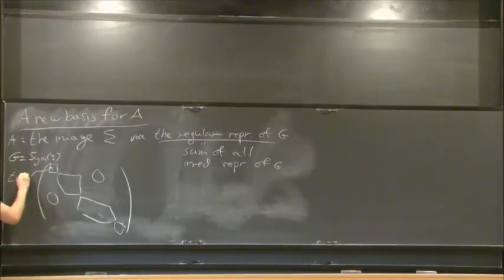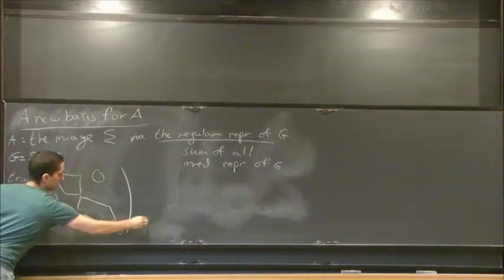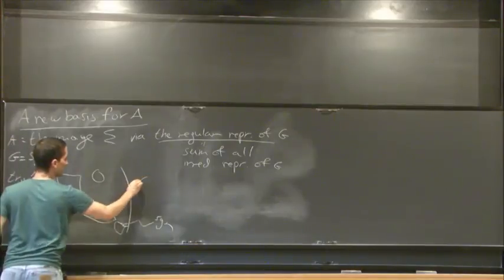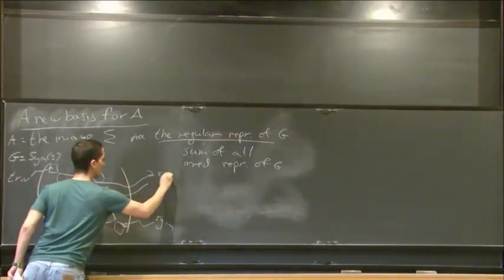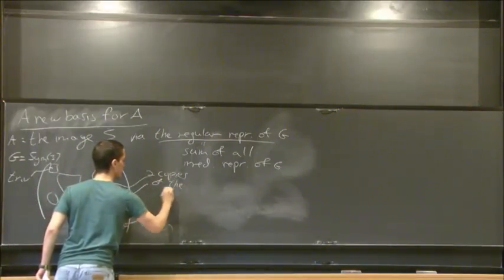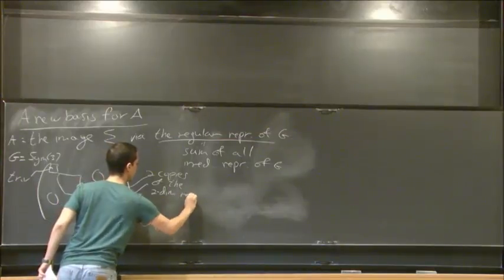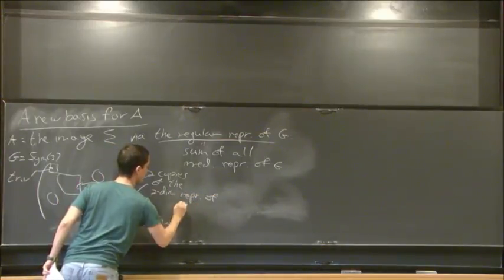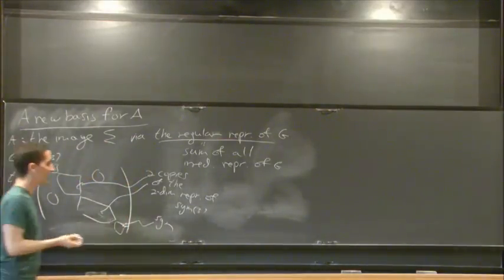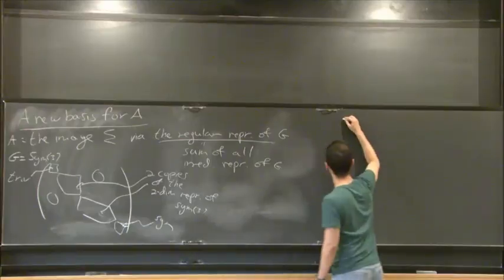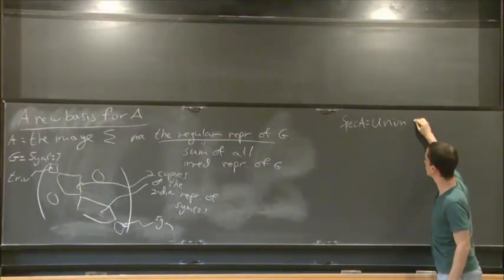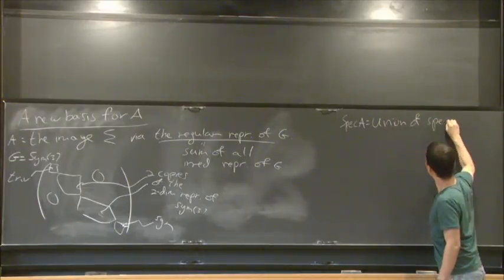This is a trivial representation. So this is the sign representation. And here we have two copies. These are two copies of the standard representation, or the two-dimensional representation of this group. And now, what we should note, and it's easy to see that the spectrum of A is simply the union of the spectra of the blocks.